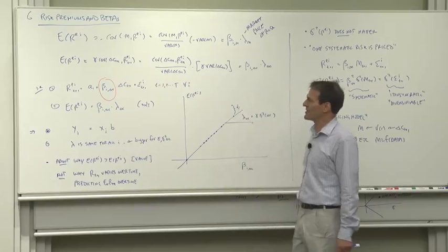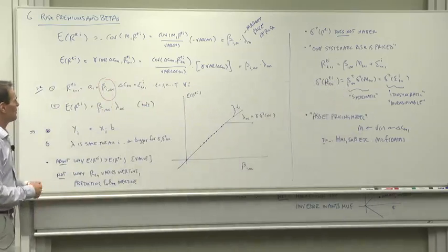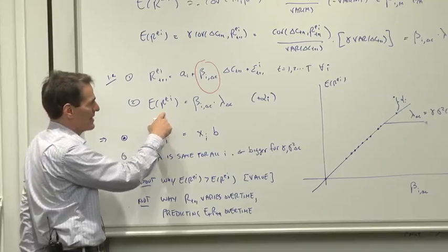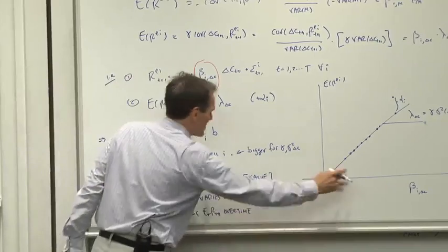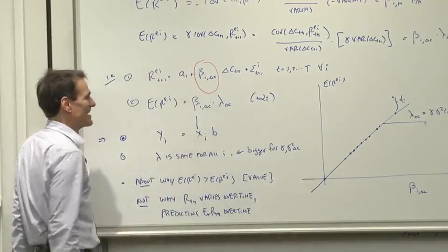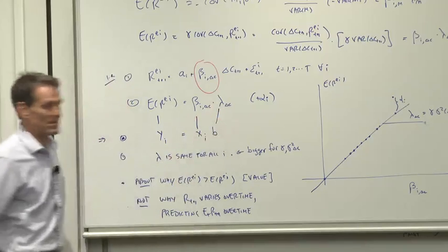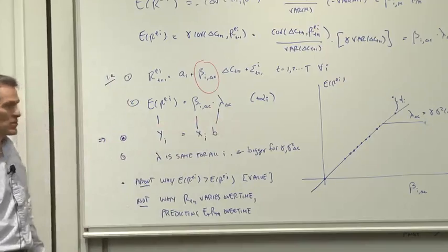Now, a few comments on this model. First of all, the notation is traditional, but watch out here. Expected return is the thing we're trying to explain, and beta is the right-hand variable. We're used to beta being slope coefficients, but no. In this cross-sectional relationship, beta is like the x, expected return is like the y, and lambda is like the slope coefficient. Beta is the thing we're using to explain expected returns.